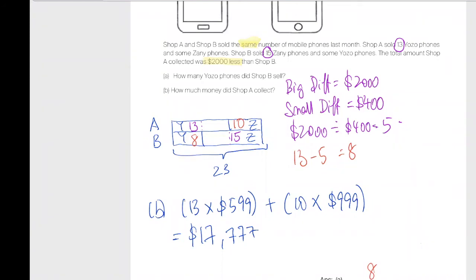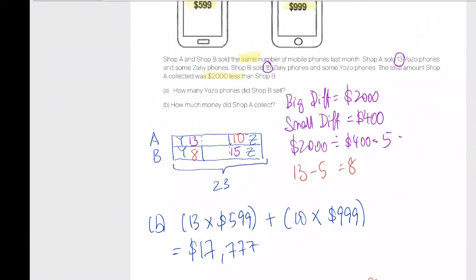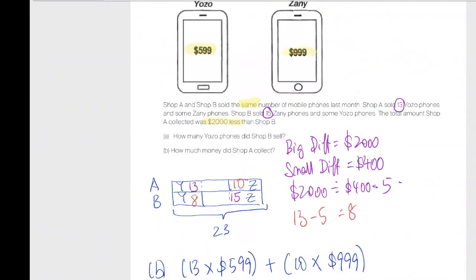Just always remember, big div, small div is the same concept. If all together Shop A received 2,000 less, but they sold the same number of phones, it tells you that Shop A must definitely have sold more Yozo phones. How many more Yozo phones? Firstly, you find the small difference.